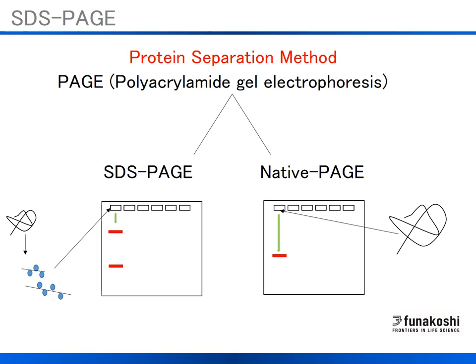Polyacrylamide gel electrophoresis has been widely used for separating and characterizing protein sizes. PAGE can be classified into two major methods: SDS-PAGE or Native PAGE. SDS-PAGE uses SDS detergent, and with a combination of SDS and reducing reagents, proteins are separated by electrophoresis. The proteins can be observed as bands with higher molecular weight proteins located on the upper side of the gel, while lower molecular weight proteins are located in the lower part of the gel.